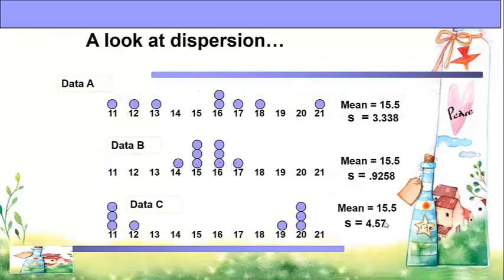Let us take a look at dispersion. For data A, data B, and data C, when we calculate the mean of each data set, the mean is equal to 15.5. But when we calculate the standard deviation of each data set, it has a different standard deviation.